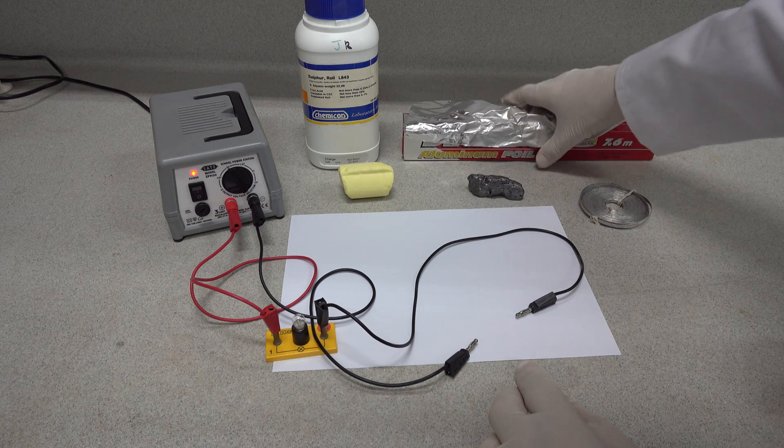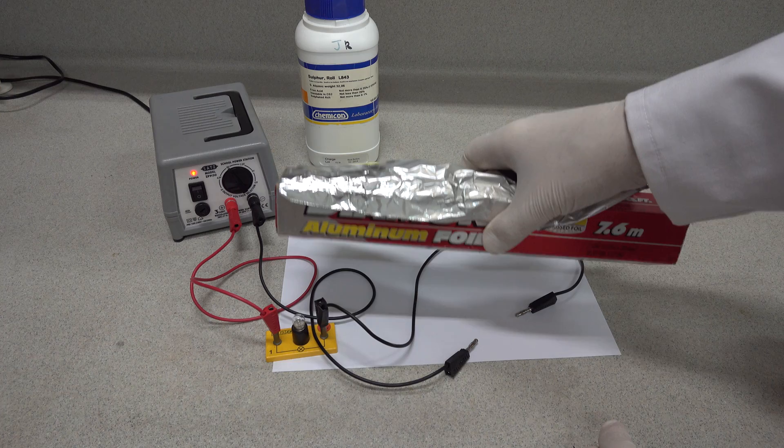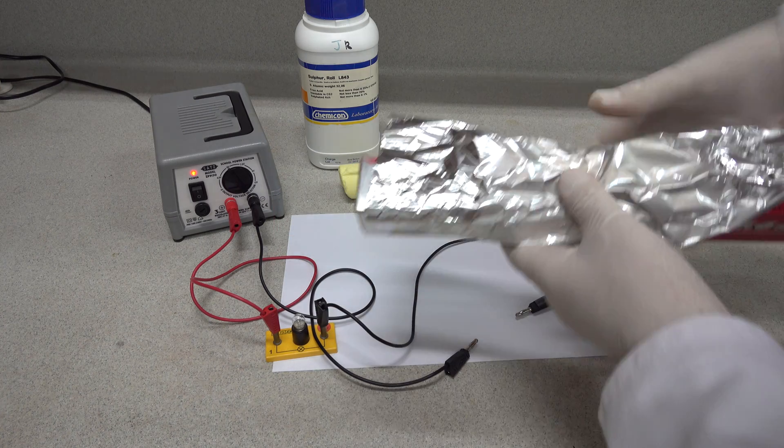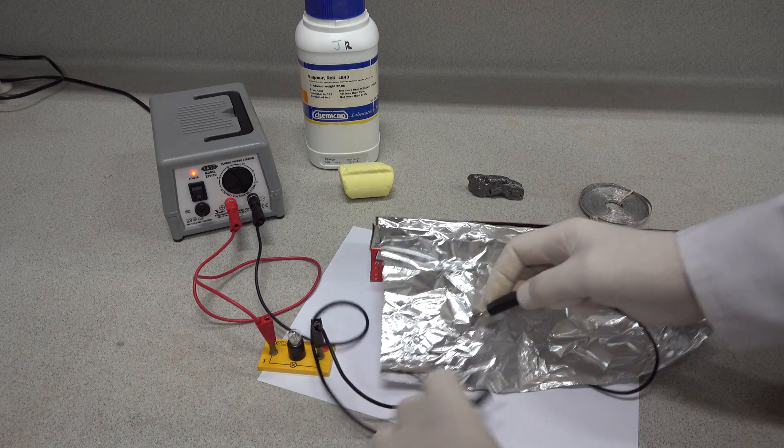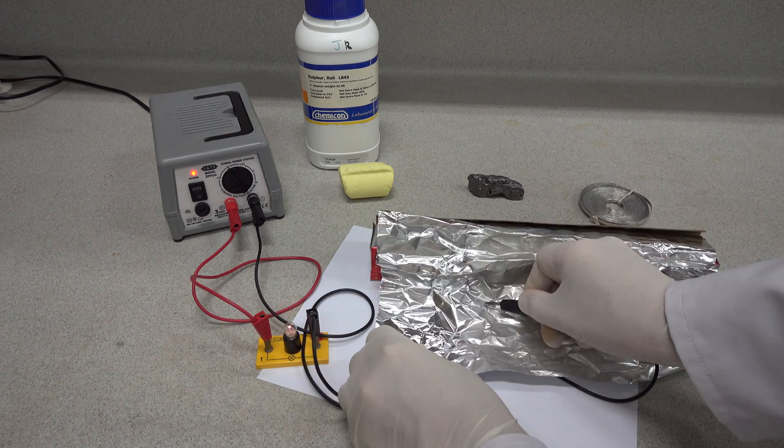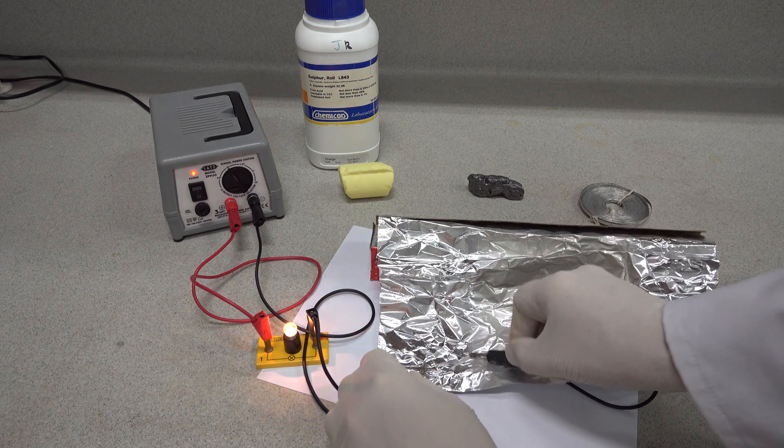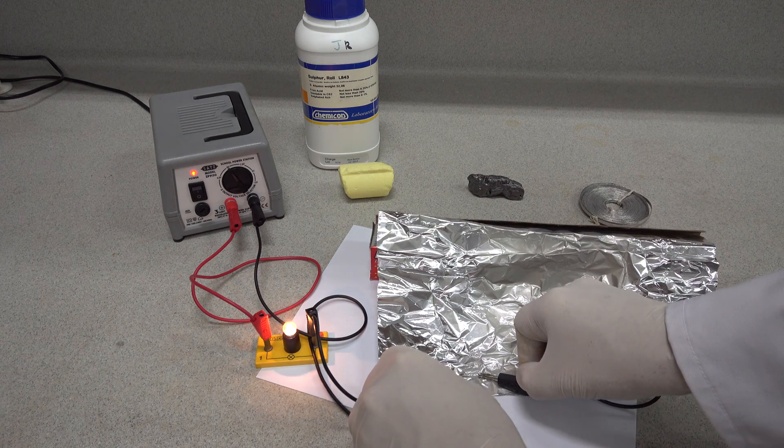Moving on to our second element, let's use some aluminium foil. If we place the electrodes on the aluminium foil, you can see that, yes, it conducts electricity rather well.